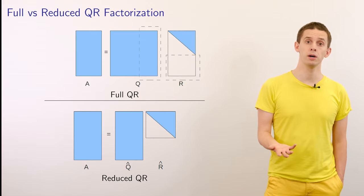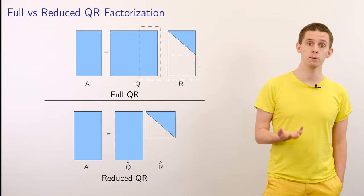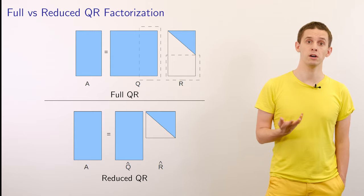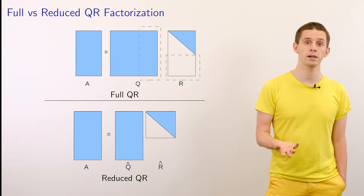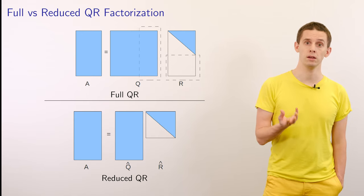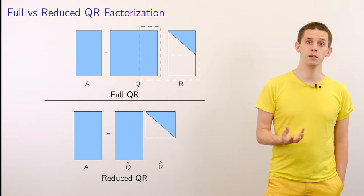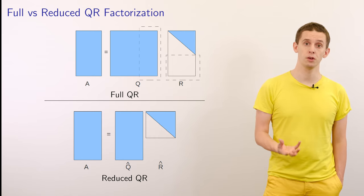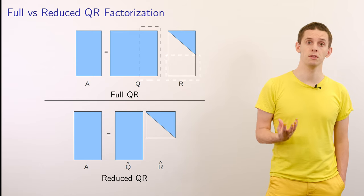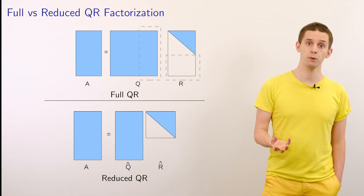This gives us two ways to think about the QR factorization. In the full QR approach, matrix A is the product of a square matrix Q multiplied by R, which consists of the upper triangular block R̂ padded with additional rows of zeros. When we perform this multiplication, the final m minus n columns of Q will multiply against those rows of zeros and have no effect on the outcome.